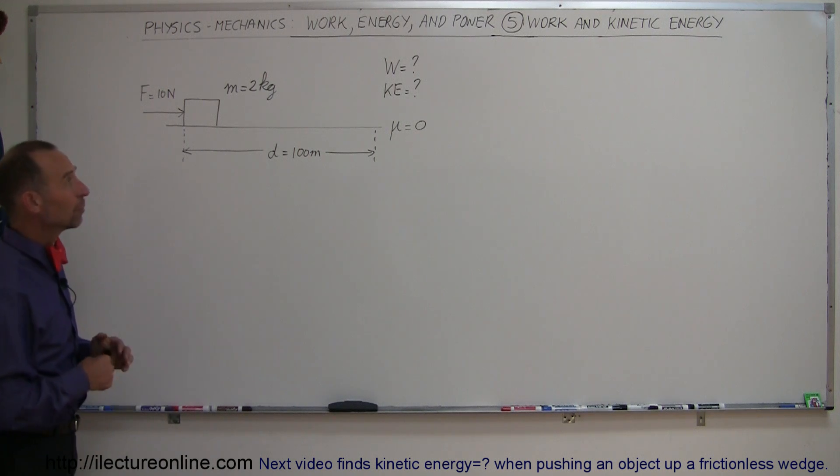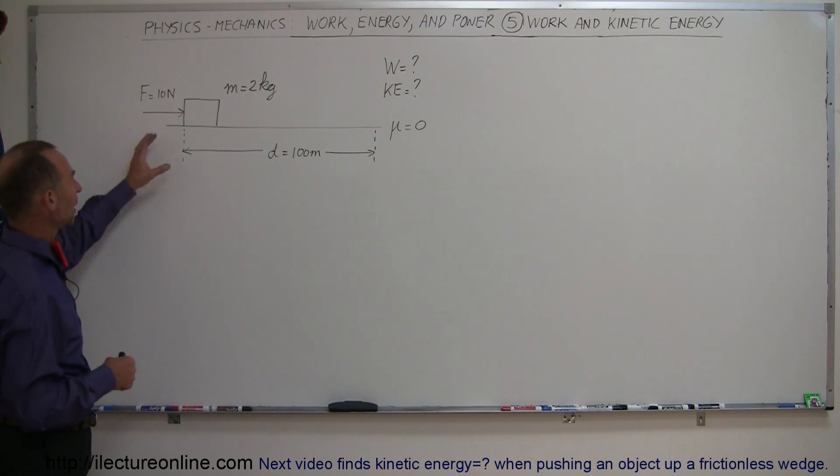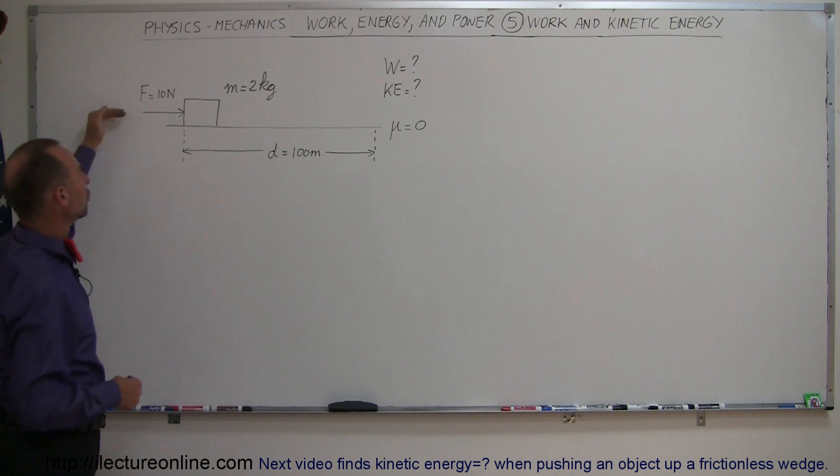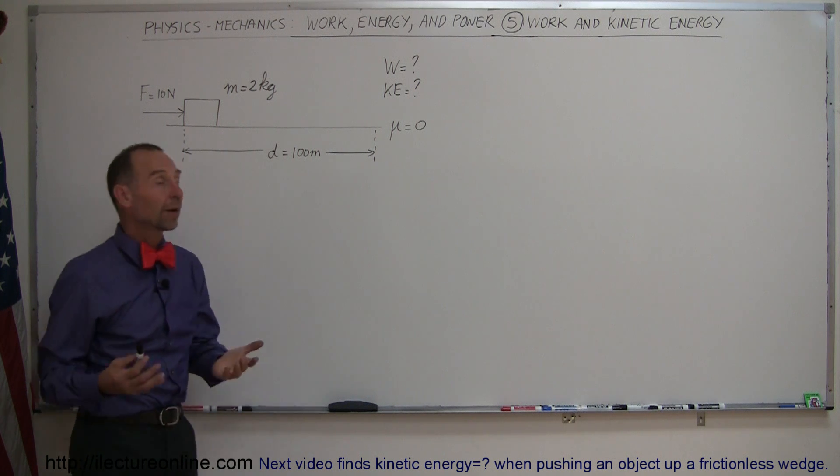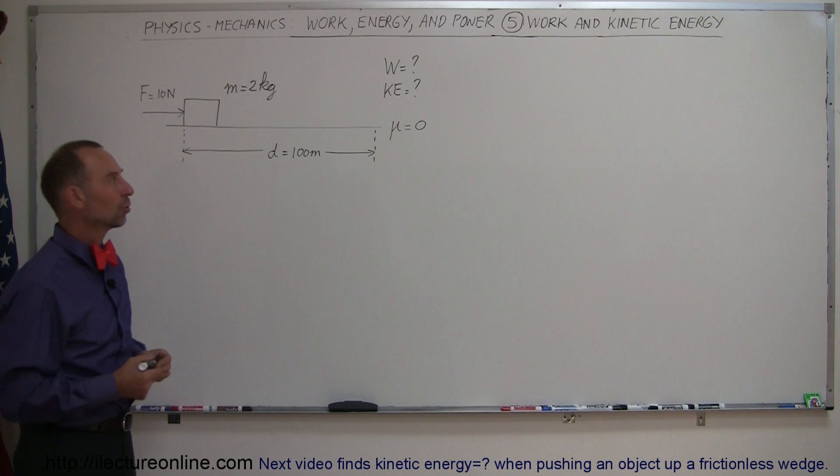In this next video, we're going to relate work done on an object and its resulting kinetic energy. Now, here we have an example. We have a mass equal to 2 kilograms, a force of 10 newtons pushing to the right on a frictionless surface for a distance of 100 meters. So, let's figure out how much work we have done on the object and what its resulting kinetic energy will be.